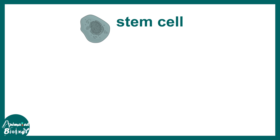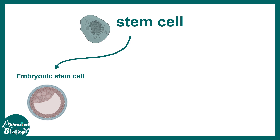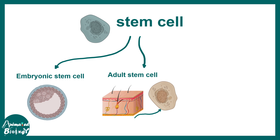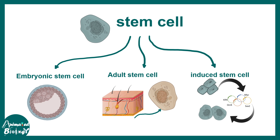Stem cells can be subcategorized based on some classical ideas. Some could be embryonic stem cells. Some could be adult stem cells, present in skin or in parts of the brain like the hippocampus. There could also be induced pluripotent stem cells — that means one cell can be forced to become a stem cell using a chemical formula.